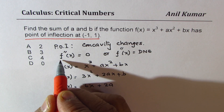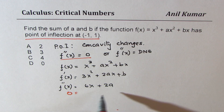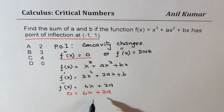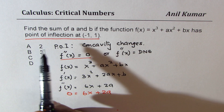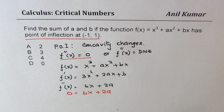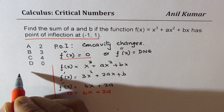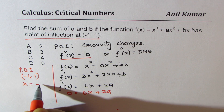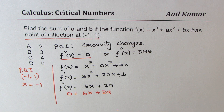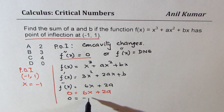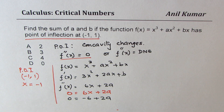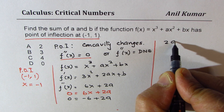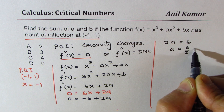For the second derivative to be 0, we equate it to 0 and solve for a. We get 6x plus 2a equals 0. Since the point of inflection is at x equals -1, we substitute x as -1 to get 0 equals -6 plus 2a. Solving, 2a equals 6, so a equals 3.